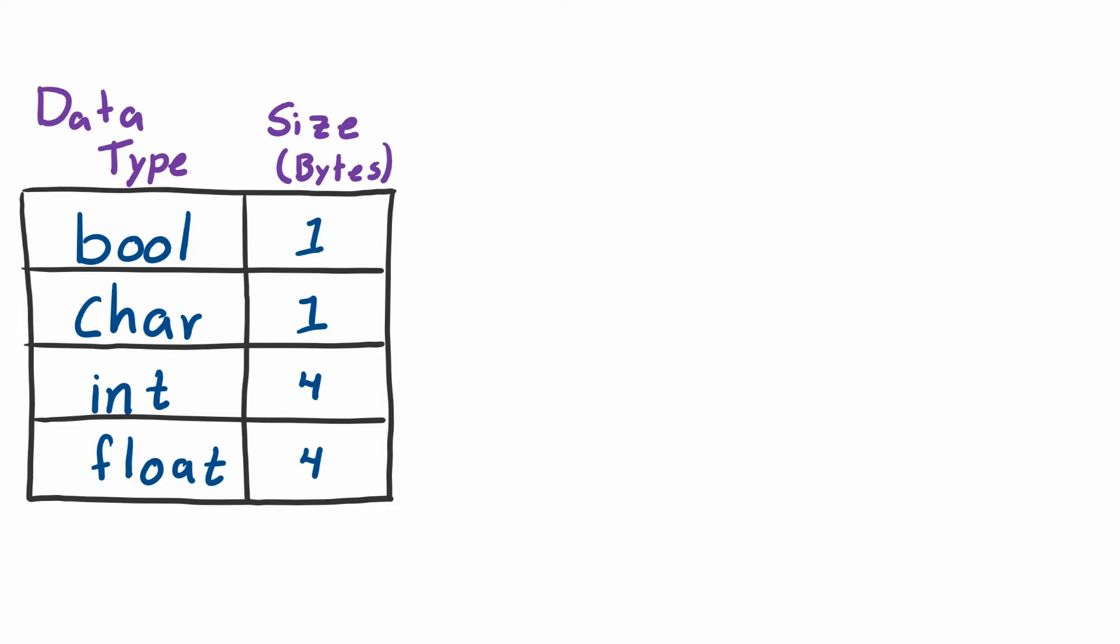On the left I have a table. In the first column I have the data types listed and in the second column I have the size in bytes that they occupy. You'll notice that booleans and characters both require one byte in memory and integers and floats each require four bytes.